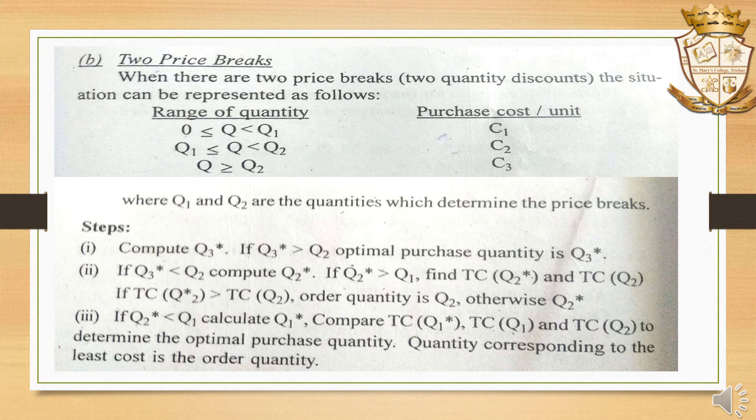The next price break model is two price breaks, with break points Q1 and Q2. This means there are three prices: C1, C2, and C3 corresponding to the three quantity ranges. We have three holding costs CH1, CH2, and CH3, and we perform calculations for each.